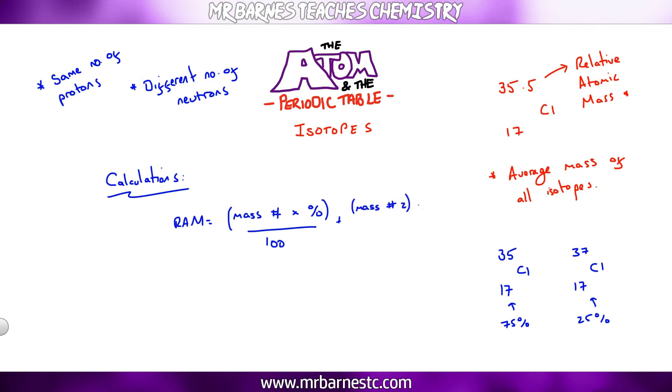So for example, our chlorine atom, you take off 35, you multiply it by the 75%, so 35 times 75 and you divide it by a hundred. You do the same with chlorine 37, so 37 times by the percentage which is 25, divide that by a hundred. Then when you add all that together it comes to 35.5, a nice and simple calculation as long as you can remember the two steps needed.